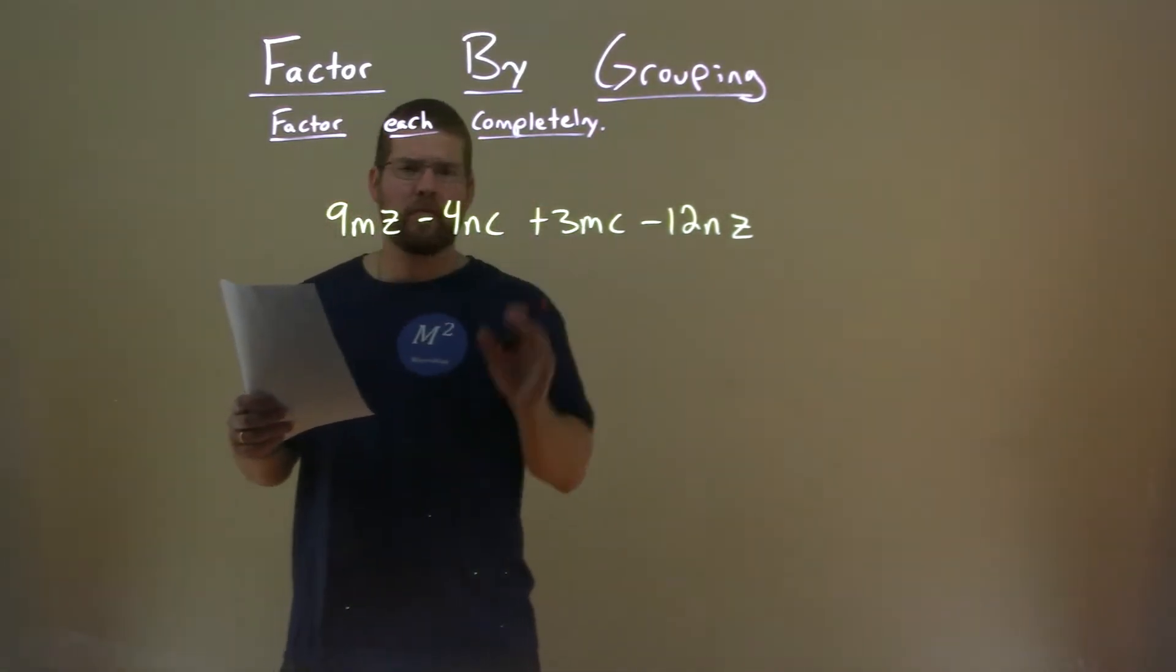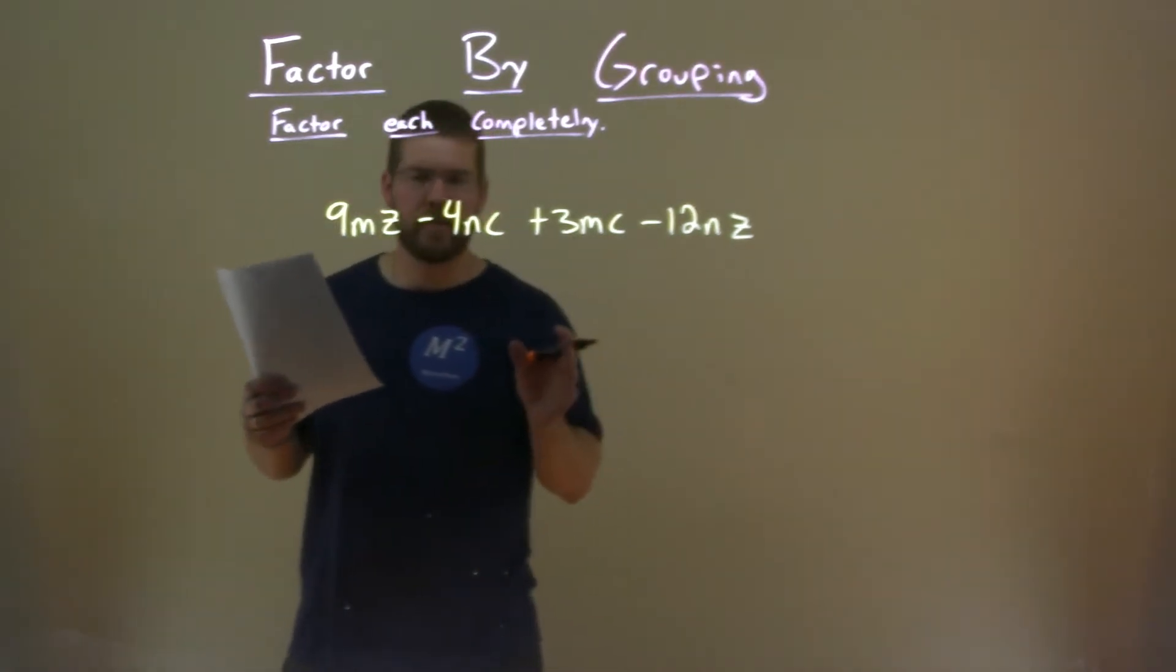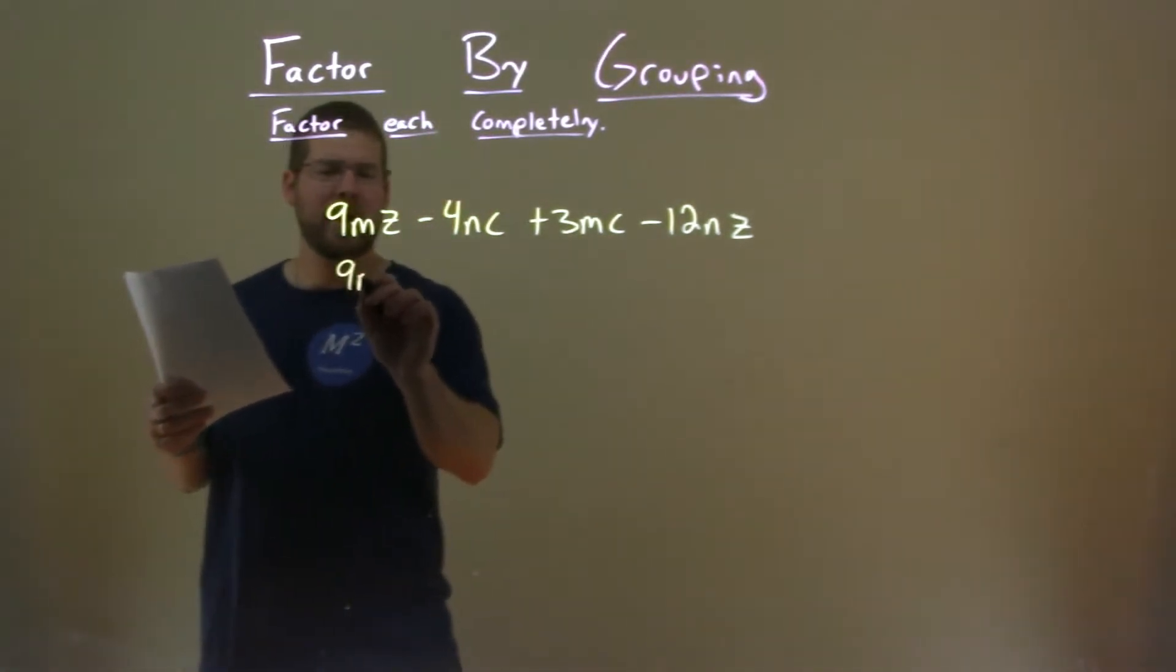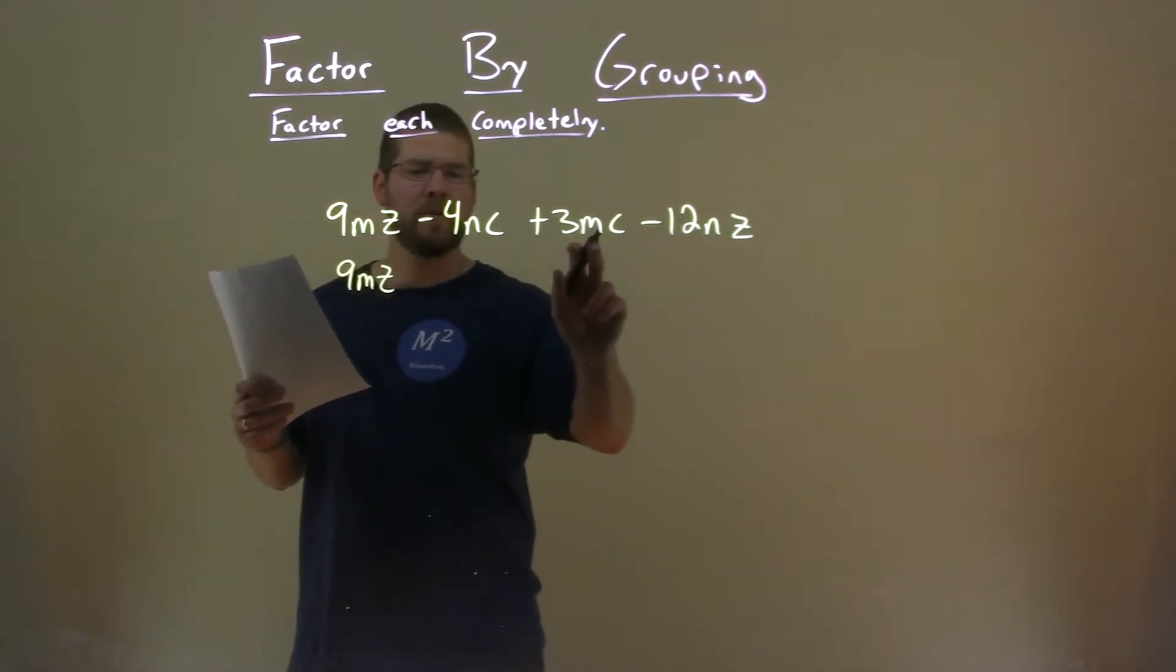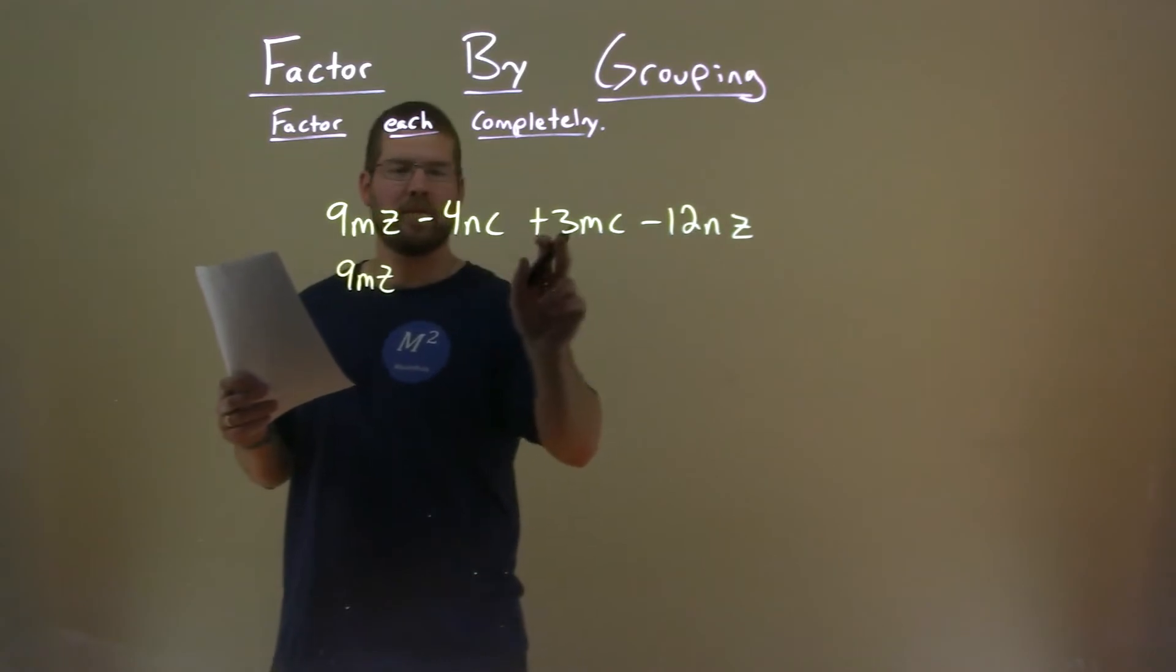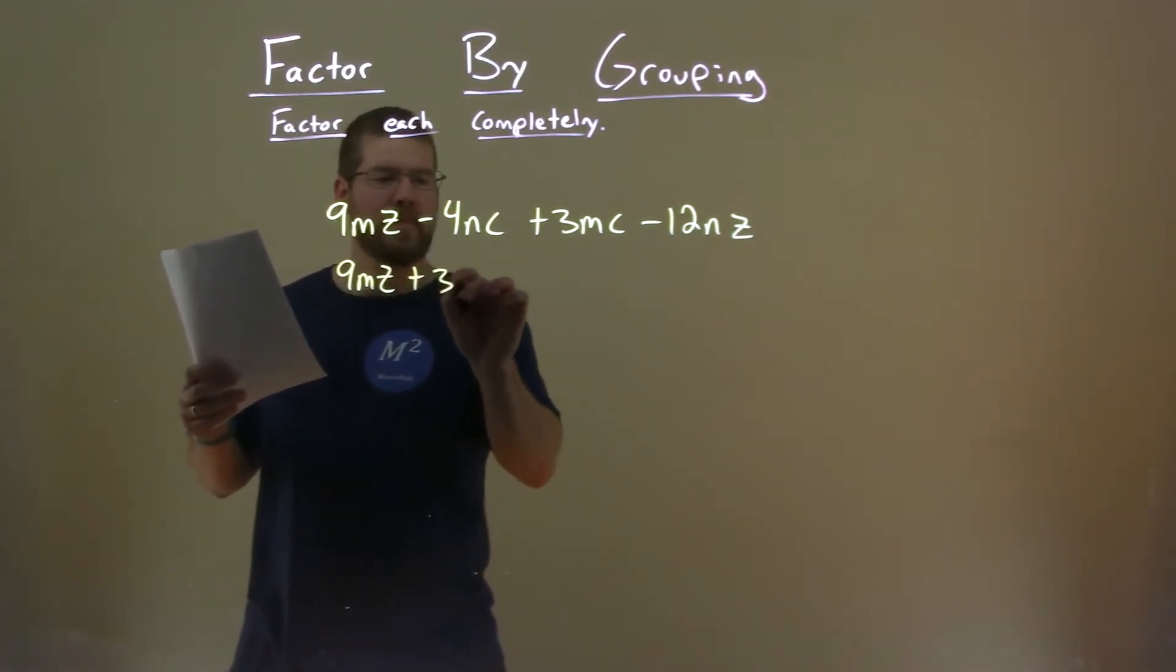Well, I'm going to actually rearrange this and try to put similar terms together. I'm going to bring down my 9MZ here, and I see this M, they both have an M here, and they both 3 and 9, 3 goes into 9 pretty evenly, so I'm going to bring that down, 3MZ.